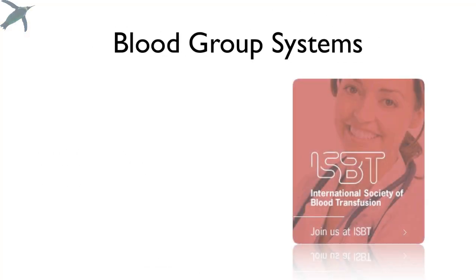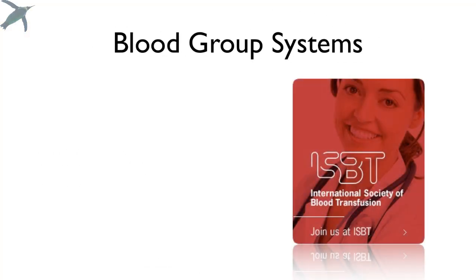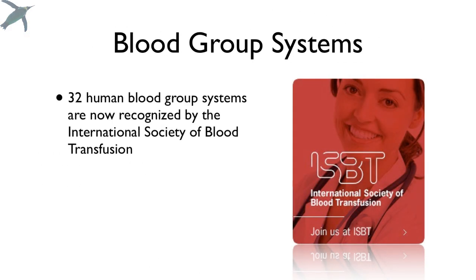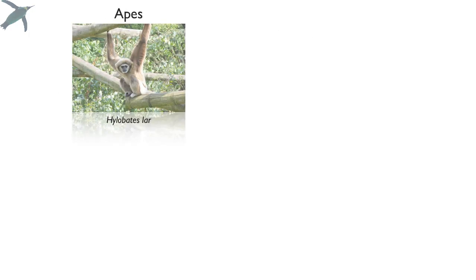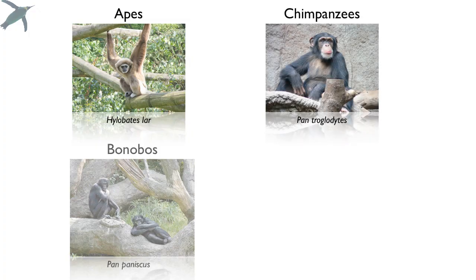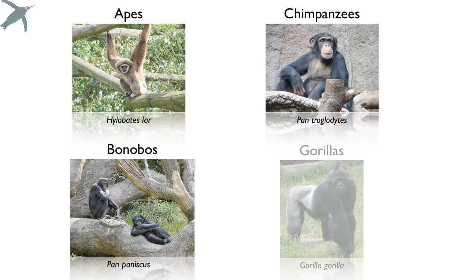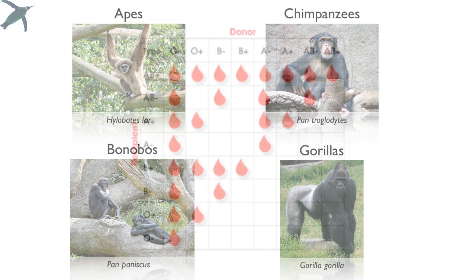But it accounts for a lot of the confusion that goes on about blood groups, and there are many blood groups. Certainly the most important and the focus of this video are the ABO blood group and the RH group. Interestingly, we share the ABO and RH blood groups with our relatives — apes, chimpanzees, bonobos, and gorillas.